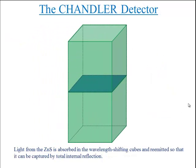Light from the zinc sulfide is absorbed in the wavelength shifting cubes and re-emitted so that it can be captured by total internal reflection.